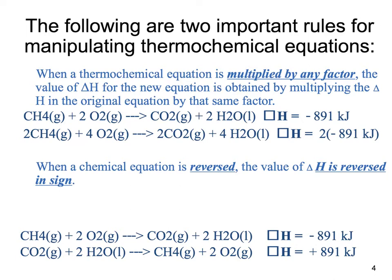If you flip the reaction and your products and reactants switch places, then you also have to reverse the sign of the delta H, because if a reaction generates heat one way, then the other way it's going to absorb heat.